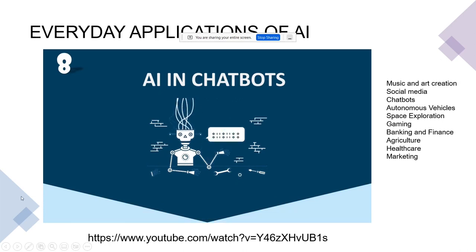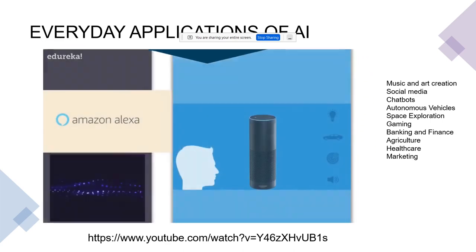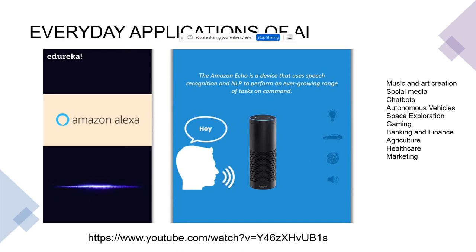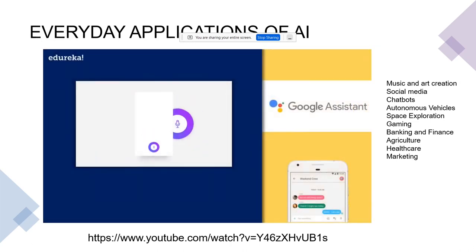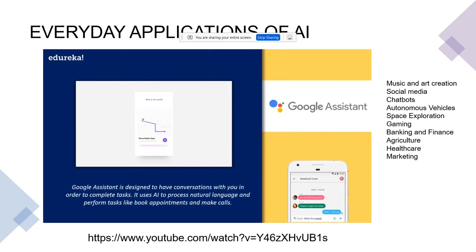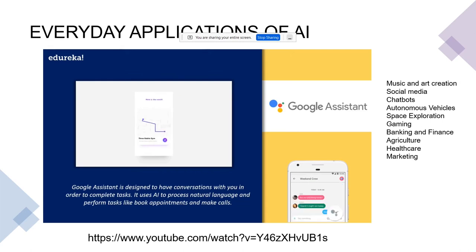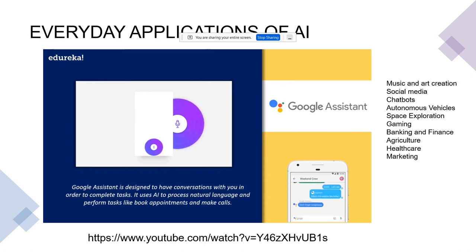Virtual assistants have become a very common technology. Almost every household has a virtual assistant. Examples include Siri and Cortana, which are gaining popularity because of the user experience they provide. Amazon's Echo uses speech recognition and natural language processing to perform a wide range of tasks on command — it can control devices at your house, book cabs, make phone calls, order food, and check the weather. Google's virtual assistant Google Duplex uses natural language processing and machine learning to manage your schedule, control your smart home, and make reservations.